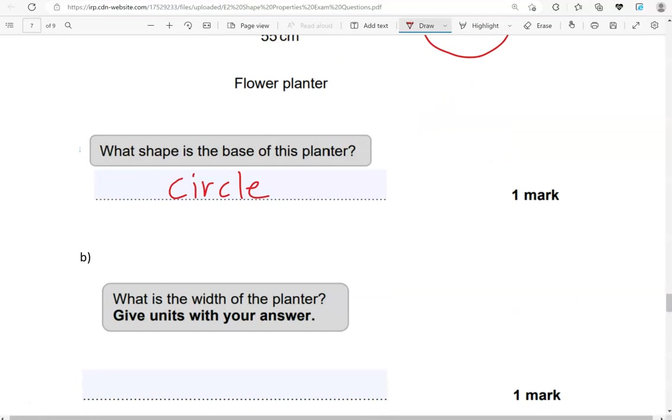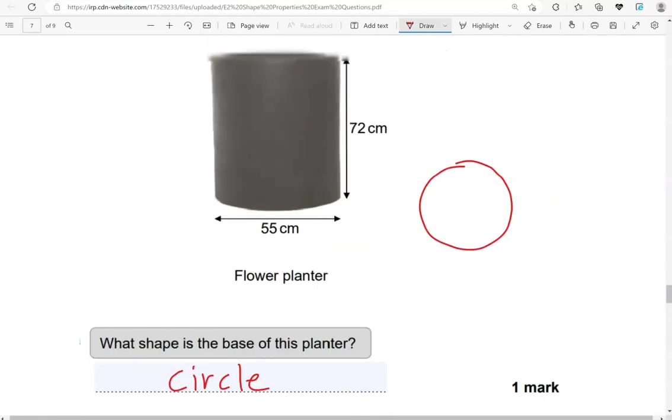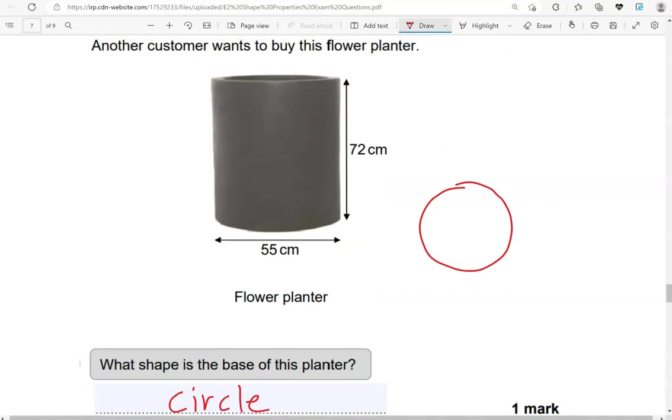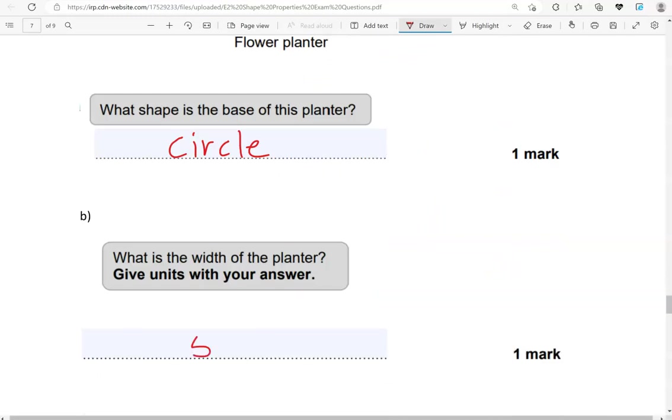What is the width of the planter? Give units with your answer. The width is 55 centimeters—this is the height—so 55 centimeters is the answer.